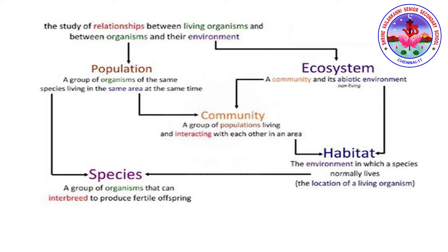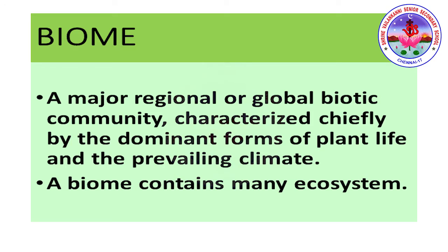To summarize as a flowchart: a species lives in a habitat; a group of species in a habitat forms a community; a community surrounded by the abiotic environment is called an ecosystem; organisms living in a particular area with different species at the same time form a population. All of these are related to ecology. A biome is a major regional or global biotic community characterized chiefly by dominant plant life and the prevailing climate, and it contains many ecosystems.